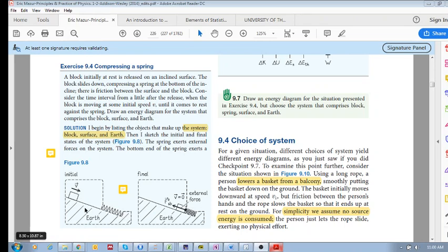So again, what are we going to do? We're going to look at delta K, delta U, delta E source, delta E thermal and work. Right, look at those.